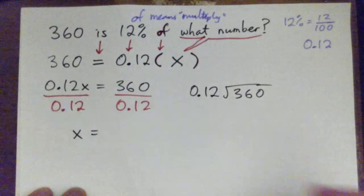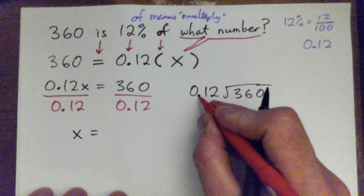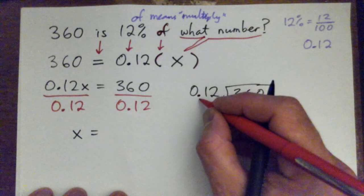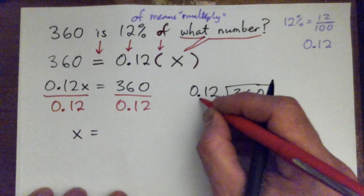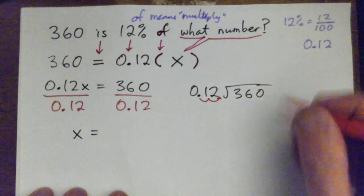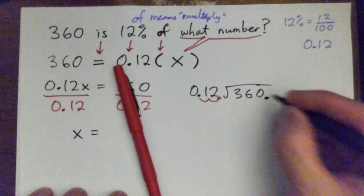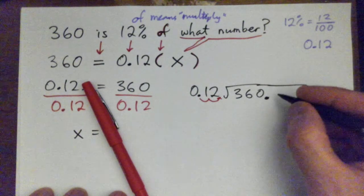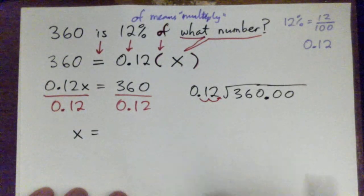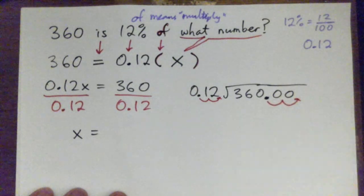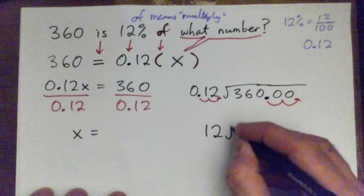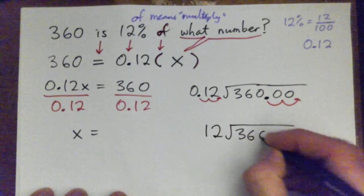Now to divide decimals, you've got to get rid of the decimal point in the denominator. So you move that - which is the divisor - you move that two spaces to the right. If you do that, you must move the decimal point of 360, which is just 360.00, and you move that one, two spaces to the right also. So you have the number 12 into 36000.